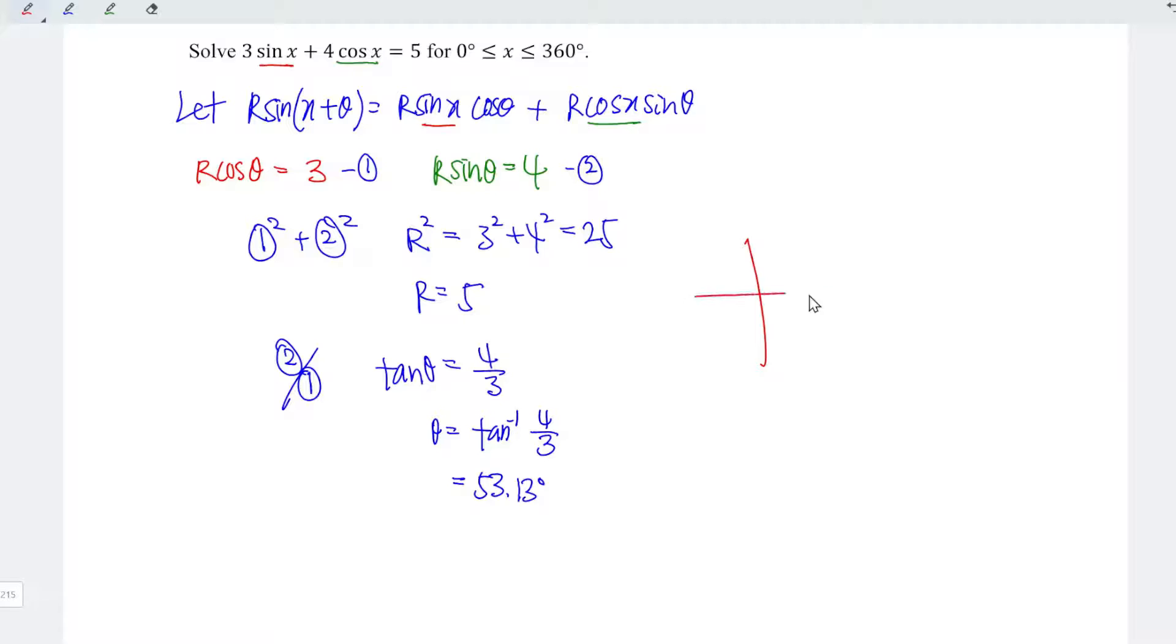Recall that we have all sine tangent cosine. To fulfill positive ratios for cos, sine, and tangent, theta must fall within 0 to 90 degrees, which is the first quadrant. Since this is in the first quadrant, we can accept this value.